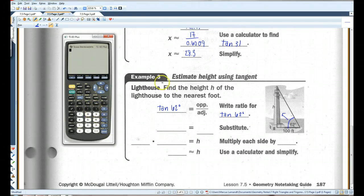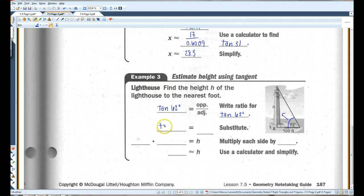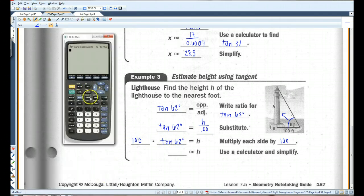Actually, let's do that at the end. So, tangent of 62 degrees equals h over 100. I'm going to multiply each side by 100. So, now I have 100 times tangent of 62.